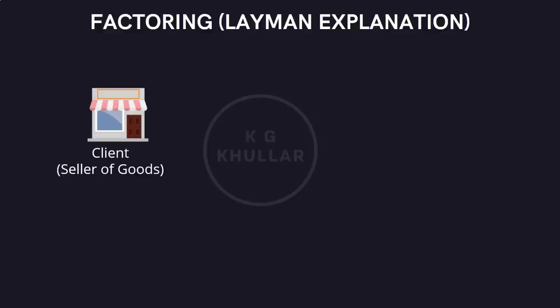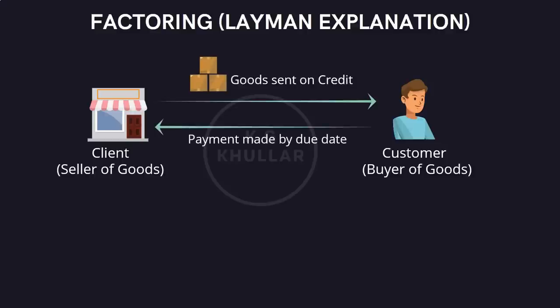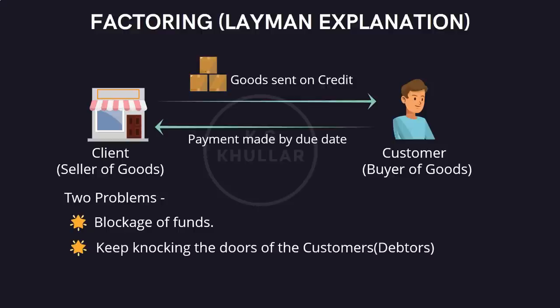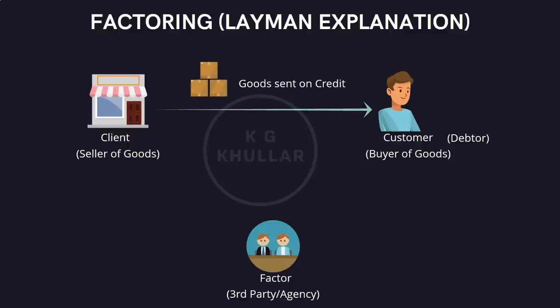Friends, in normal day-to-day business the client, that is the supplier of goods, sells goods to the customer on credit. He then sends invoices to the customer directly and collects the payment directly from the customer on due date. Now this has two problems: first it blocks the funds of the seller, and secondly you have to keep knocking the door of the debtors or customers. This is definitely a tiring process and in most occasions customers don't even pay at the given date, or there are bad debts similar to NPAs in banks. To avoid this difficulty, here comes our factor, which is basically a 3rd party or agent or agency.